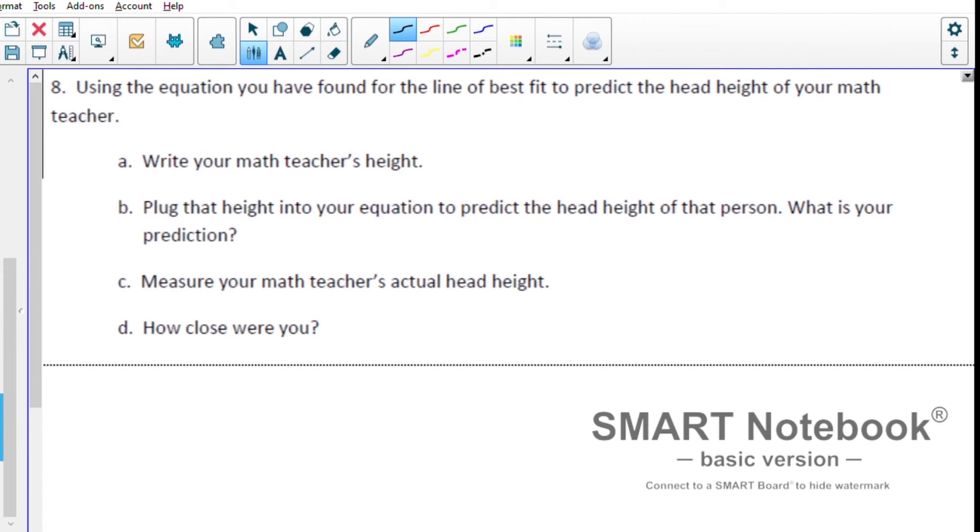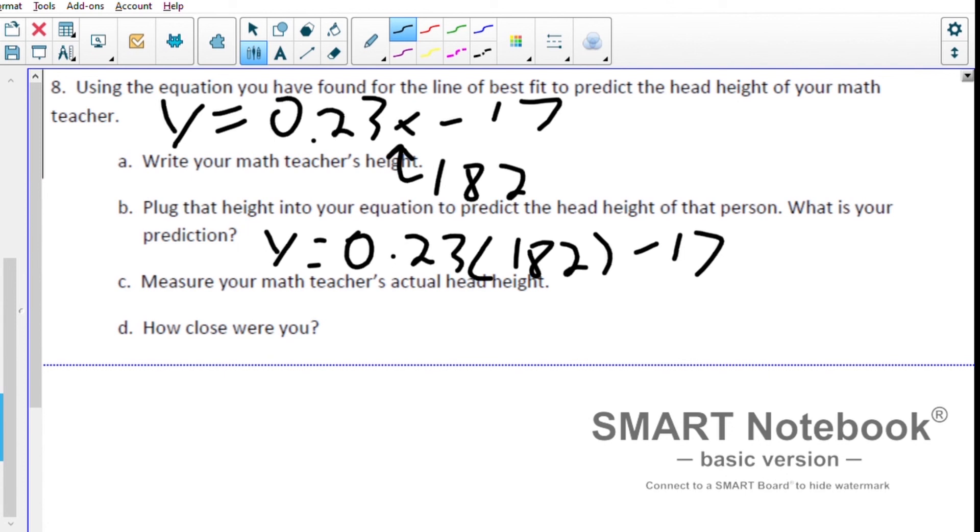Next, we're going to use our equation to predict the head height of the math teacher. Our equation was y equals 0.23x minus 17. My height is 182 centimeters. Height is x, so that's going to get plugged in. So y equals 0.23 times 182 minus 17. That gives us 24.86 centimeters as the prediction. My actual head height is 24 centimeters, and that's an error of 0.86 centimeters.